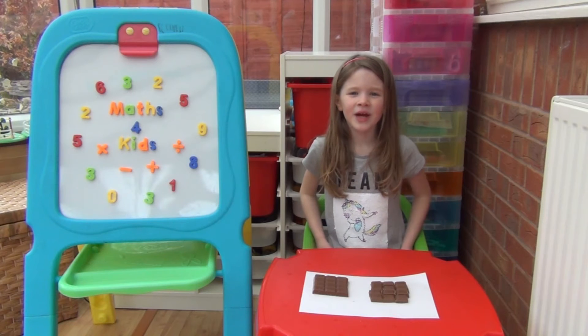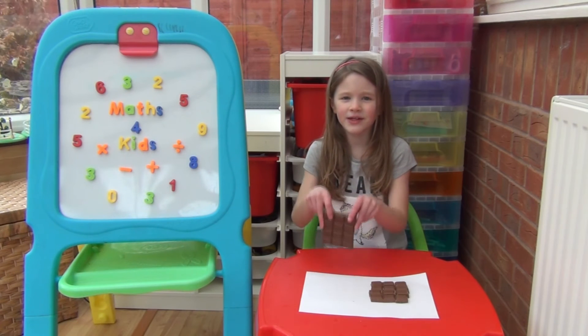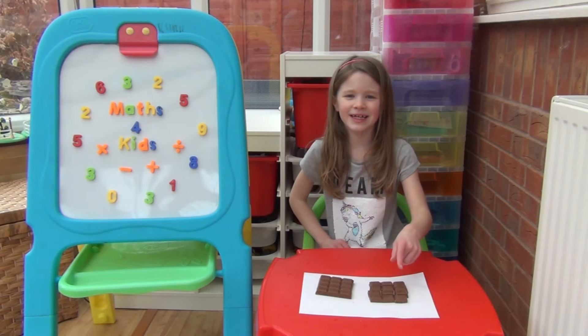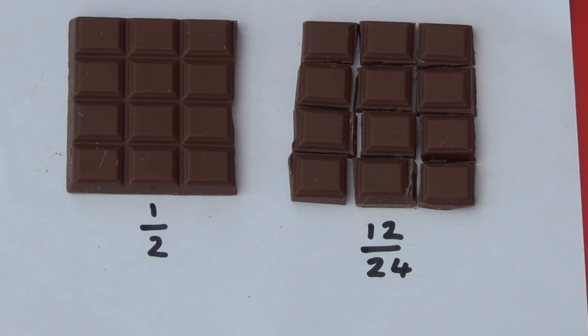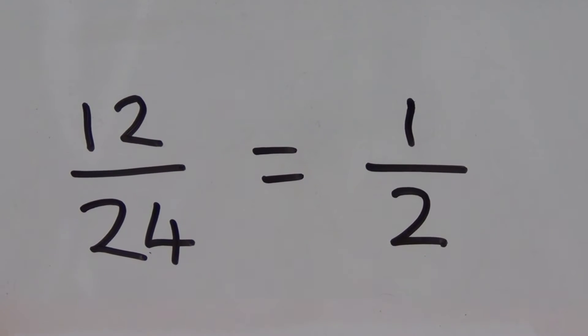After the pizza we're going to share a chocolate bar. I have half of the chocolate bar and my brother has twelve pieces. If I put my piece next to his pieces you can see we both have the same amount of chocolate. He has twelve pieces which is twelve twenty-fourths of the whole chocolate bar. I have a half so twelve twenty-fourths and a half must be equivalent. So twelve twenty-fourths equals a half.